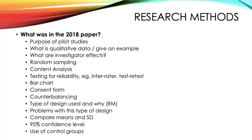Next you've got research methods. What was in the 2018 paper for this section? You had your purpose of pilot studies, what is qualitative data and give an example, what are investigator effects, random sampling, content analysis, testing for reliability so your inter-rater and test-retest, construction of a bar chart, making a consent form, counterbalancing, identifying the type of design used and why — that was repeated measures design — the problems with this design, comparing means and standard deviations, the 95% confidence level, and the use of control groups.